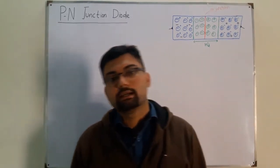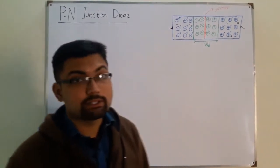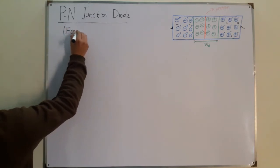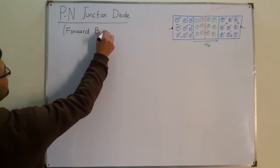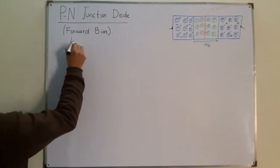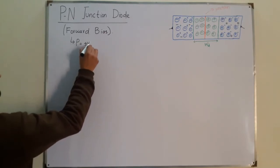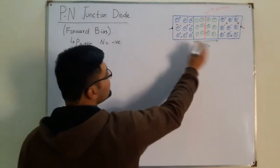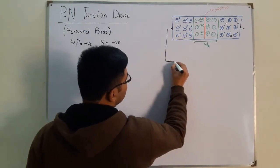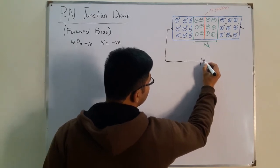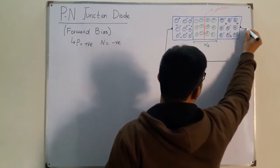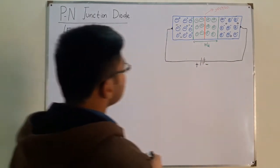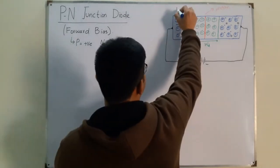Bismillahirrahmanirrahim, Assalamu Alaikum. Salaam Khan here, continuing the topic of P-N junction diode. Today we see the next case, that is the forward bias condition. In the forward bias, the P-type is connected to the positive terminal of the battery and the N-type side is connected to the negative terminal of the battery.